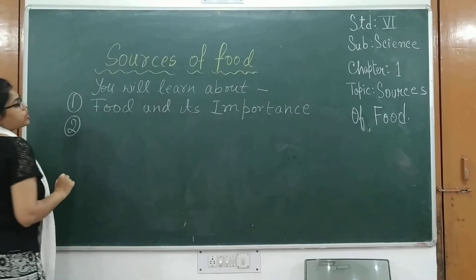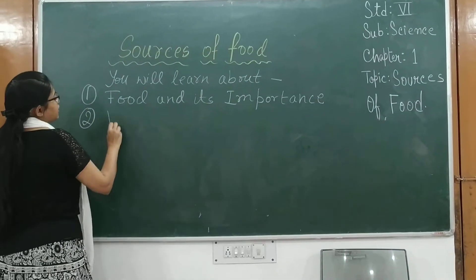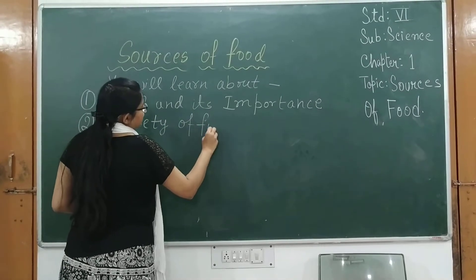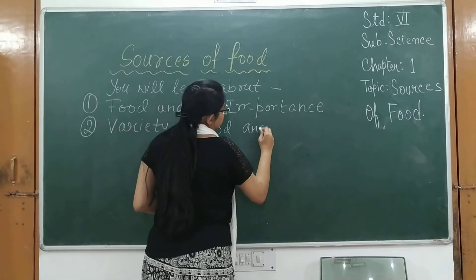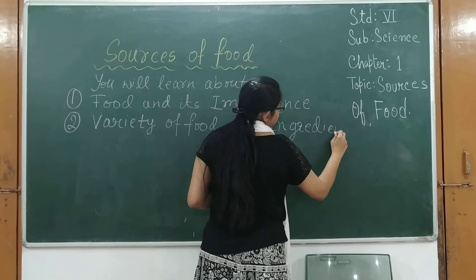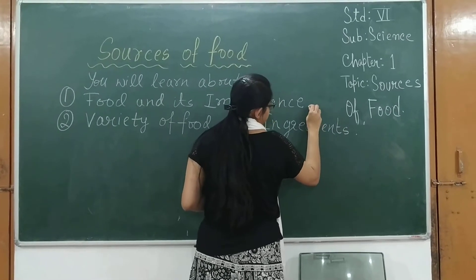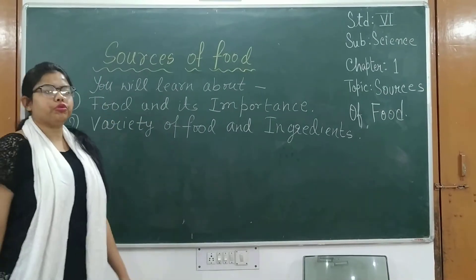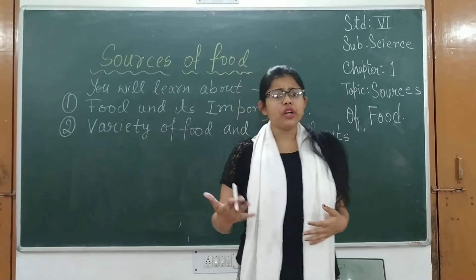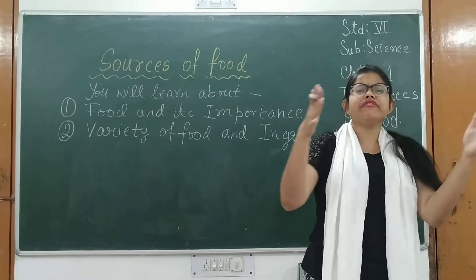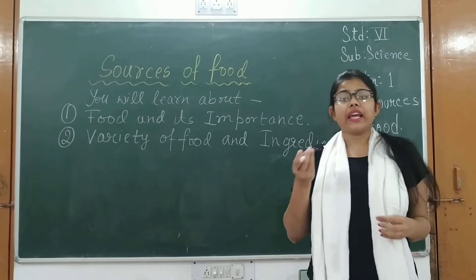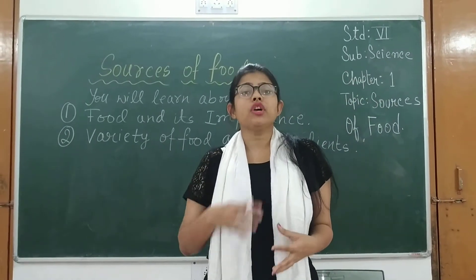The second point which you will learn in this chapter is variety of food and ingredients. Variety of food means the different types of food which are available in nature, in the market, or in different parts of a particular country or area. Ingredients are basically the things by which we prepare the food.